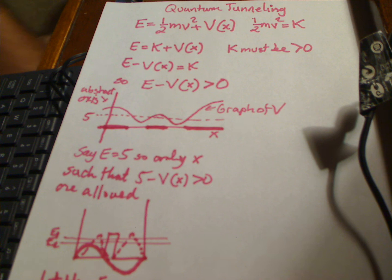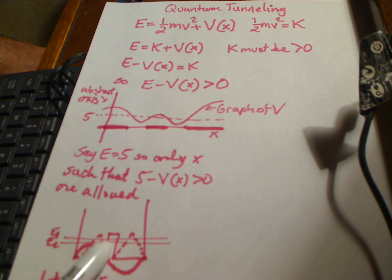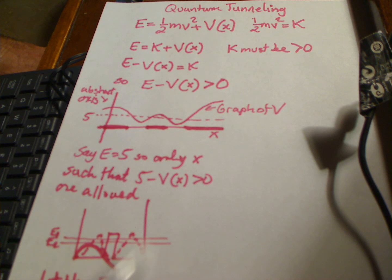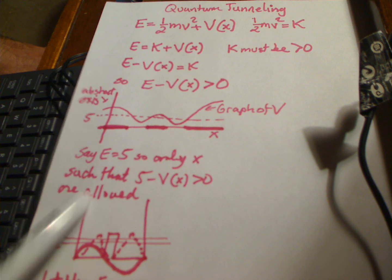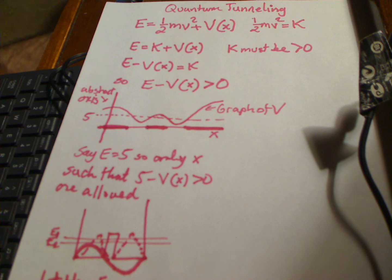Now we'll look at a quantum situation related to this. This here is a squarish W-looking potential, which is commonly called the double-well potential.